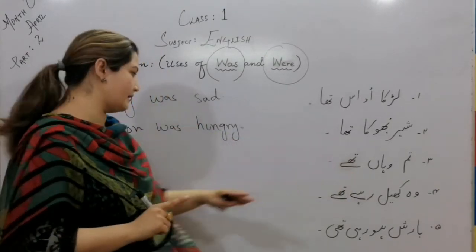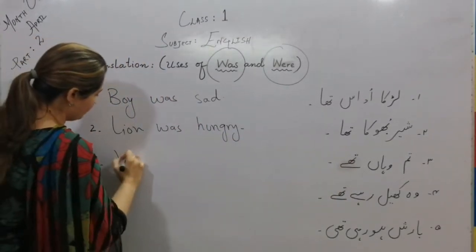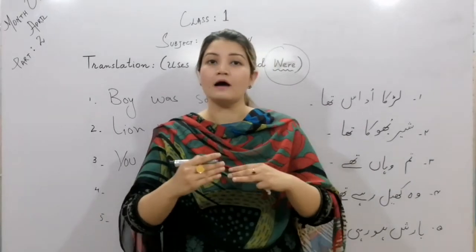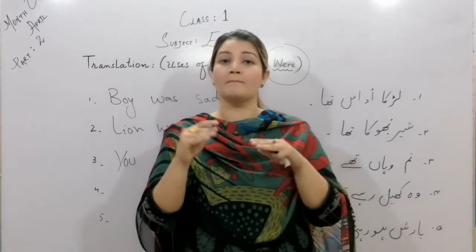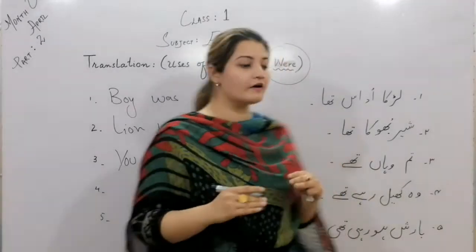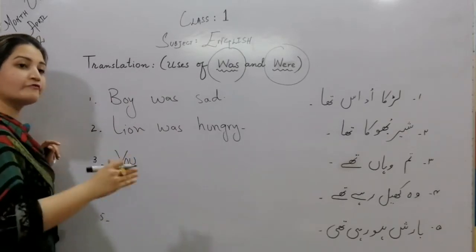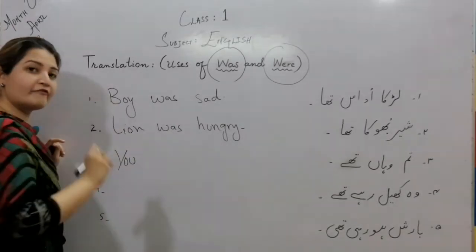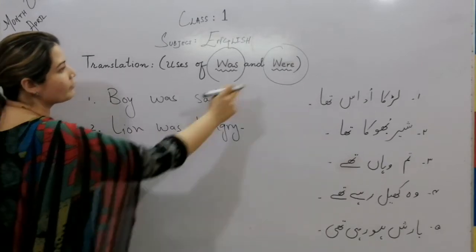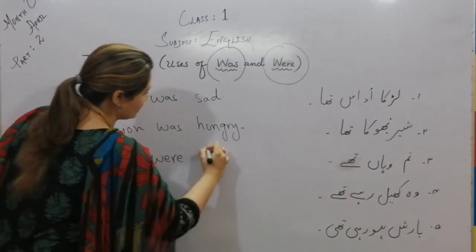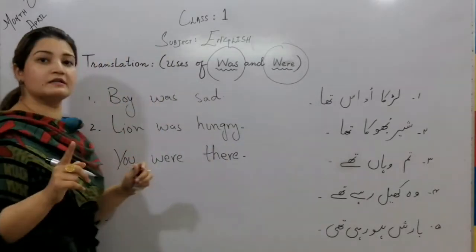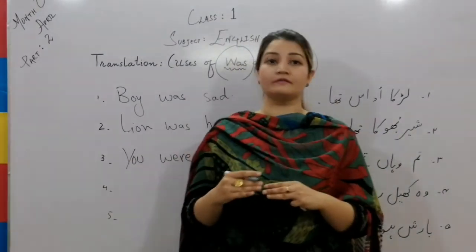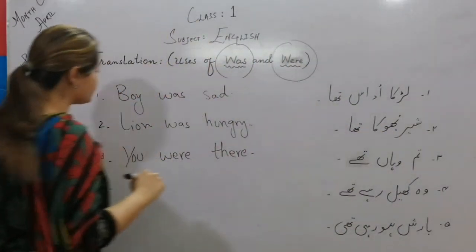'Tum wahaan tha' — now here is an exceptional case. You might think that 'you' is also singular because we are talking about one person, but according to the grammatical rule, whenever we talk about 'you', we do not apply the singular rule. In every tense, 'you' always takes the plural rule. So we write: You were there. Whenever you use 'you' in any sentence, always apply the plural rule — never the singular rule.